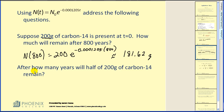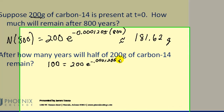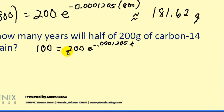The next question: after how many years will half of 200 grams of carbon-14 remain? For half-life, that means half remains, so we have 100 grams left if we start with 200 grams. We set up the equation and solve for t, first dividing both sides by 200. This is very similar to solving exponential growth problems.